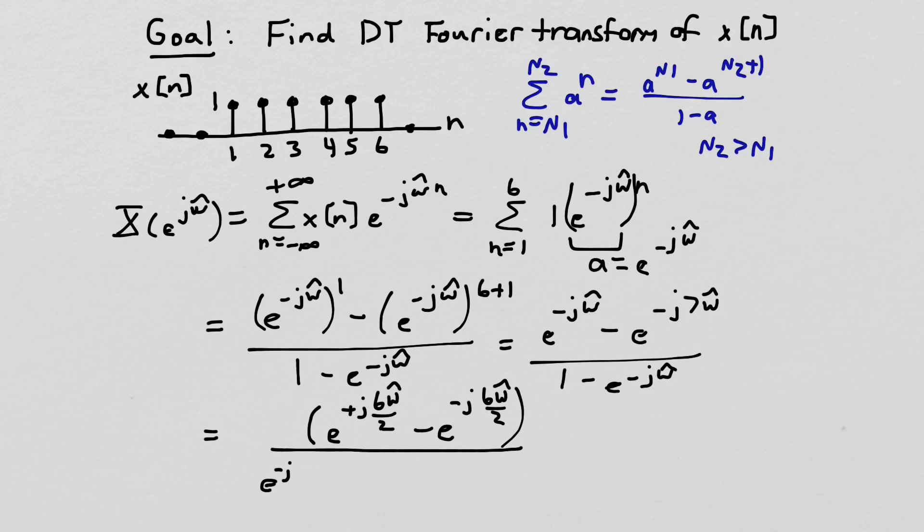The denominator, I can pull out a factor of omega hat over 2, and I'm left with e^(jω̂/2) minus e^(-jω̂/2). Now notice, for the denominator here, if I multiply back through, I multiply e^(-jω̂/2) by e^(jω̂/2), I get 1. I multiply this term by this term, I get e^(-jω̂). So I'm still okay.